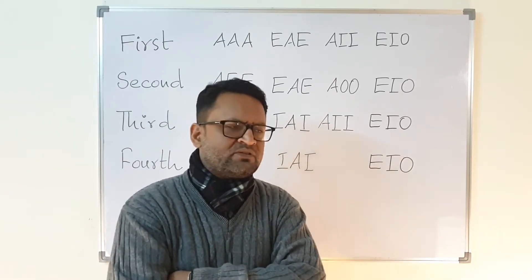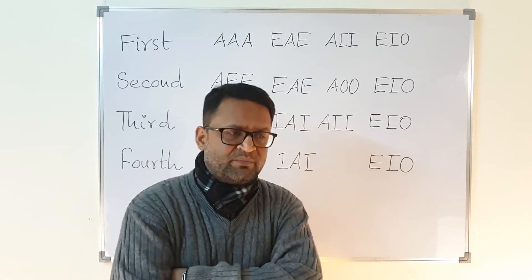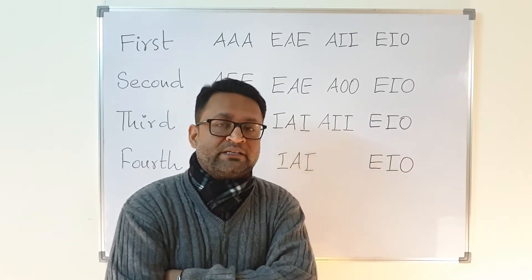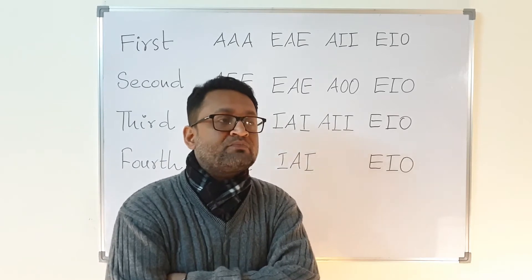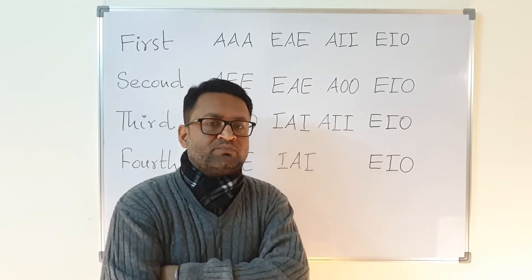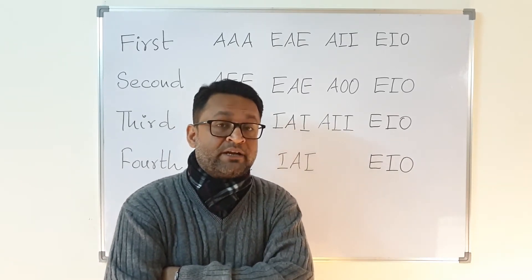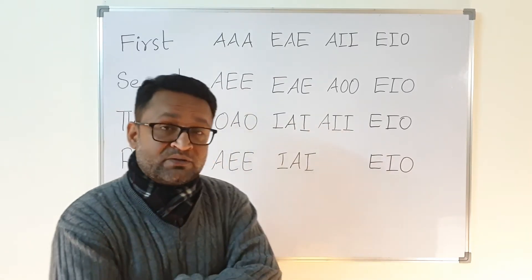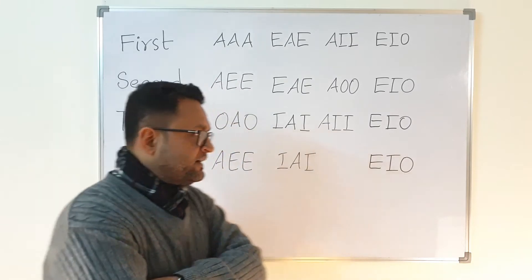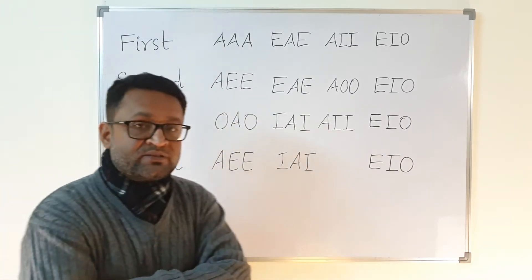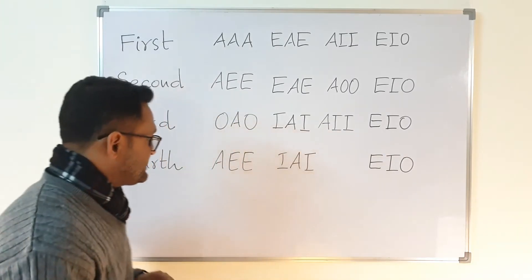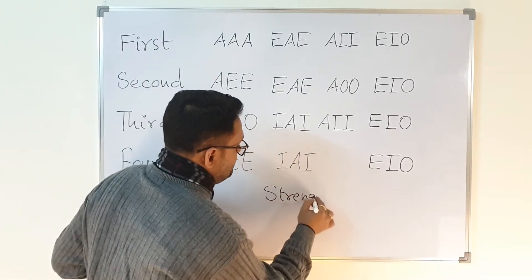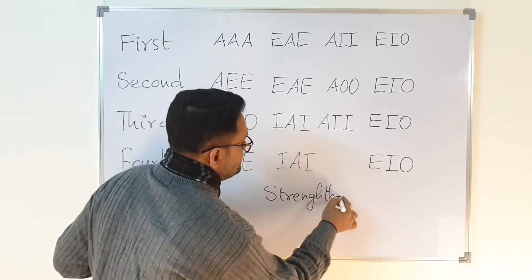The number of syllogisms has been further reduced by many logicians in the 20th and 21st centuries. But let us go back to the understanding of medieval logicians and see how the other syllogisms are formed. In order to understand how other syllogisms are going to be valid, let us first understand what is called strengthened moods.